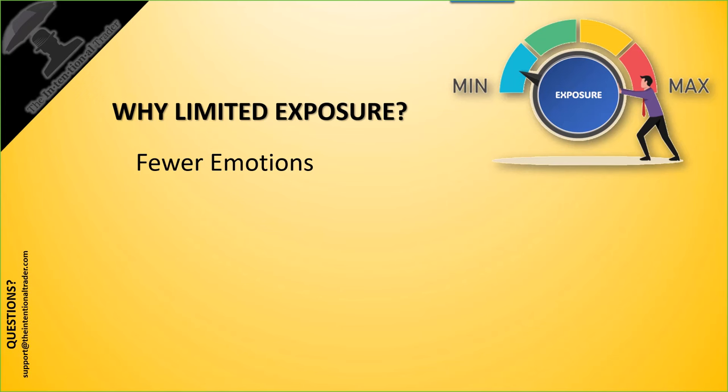When you limit your time exposure in a trade you don't have time for all of that. What we're doing is taking the information inside the current bar and comparing it to the previous maybe ten bars. We're using the most current information because it tells us what's about to happen right now — not 10 or 20 minutes from now. If the reaction we're expecting doesn't happen, we start to exit the trade pretty quickly.